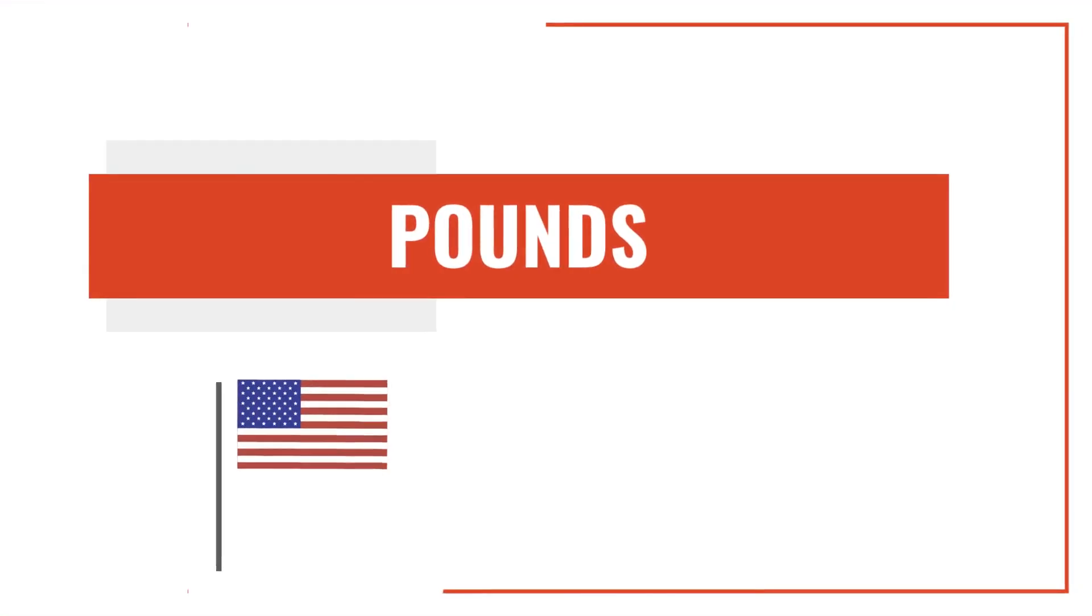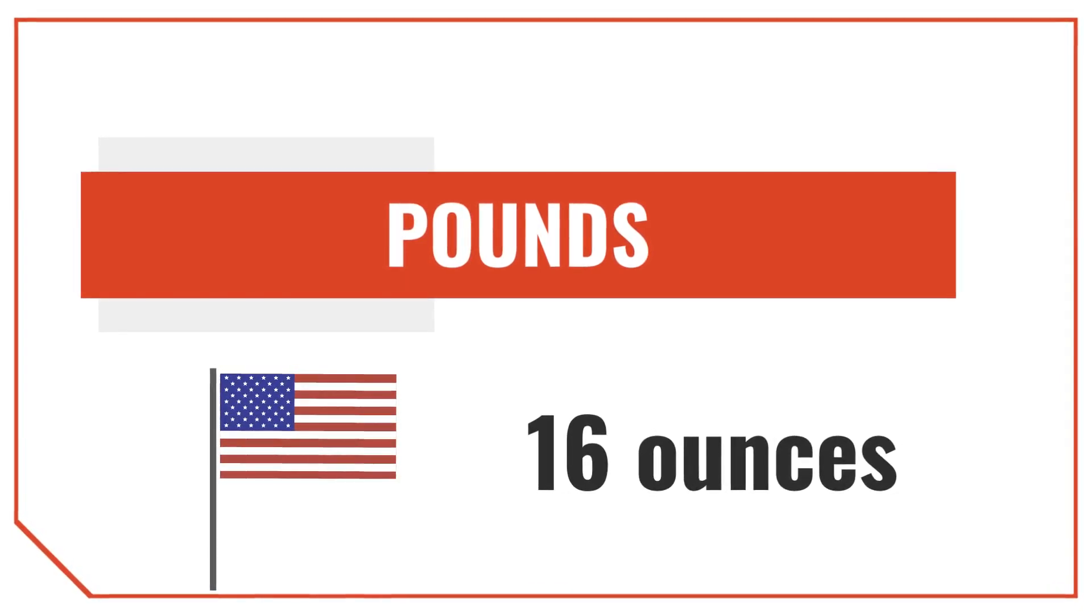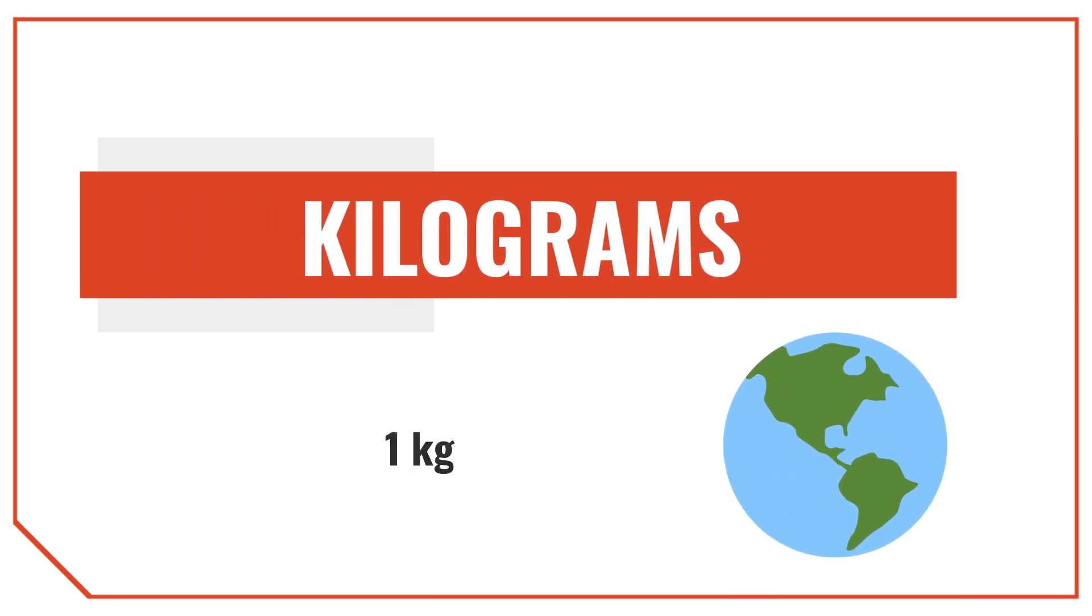Pounds are a U.S. customary and imperial unit of measure equal to 16 ounces, and we use them quite often for measuring weight in the United States. Pounds are usually denoted with the letters LB or LBS for multiple pounds. Kilograms are the standard SI metric unit of weight used around the world, and they're usually denoted with the letters KG.